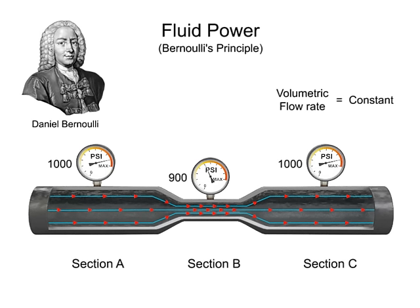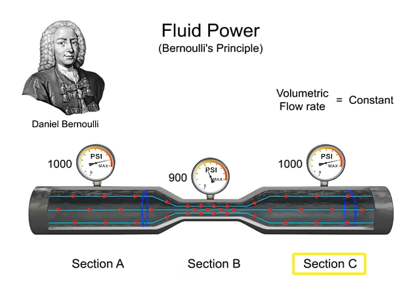This rule can also apply to the types of energy present in the system. As the pressure decreases in Section B, the potential energy converts into kinetic energy, which increases the speed of water flow and decreases the pressure. When the water reaches Section C, the kinetic energy is converted back to potential energy, illustrated by the decrease in speed of the water flow and its simultaneous increase in pressure.